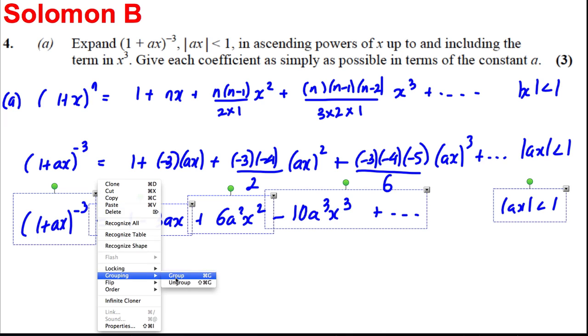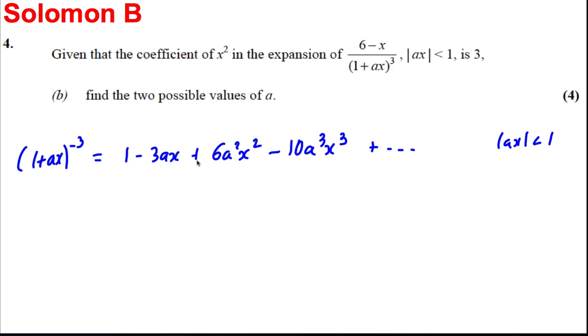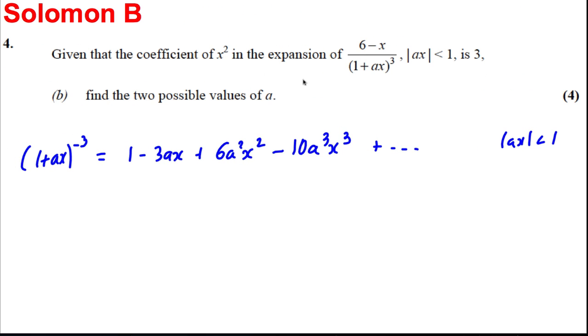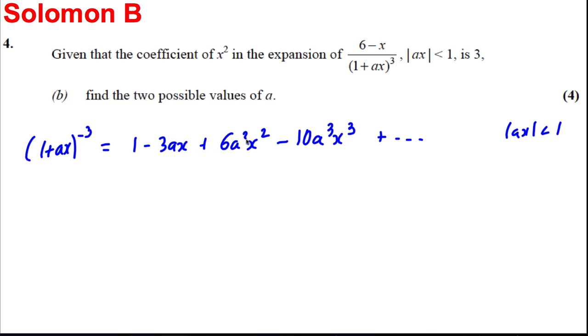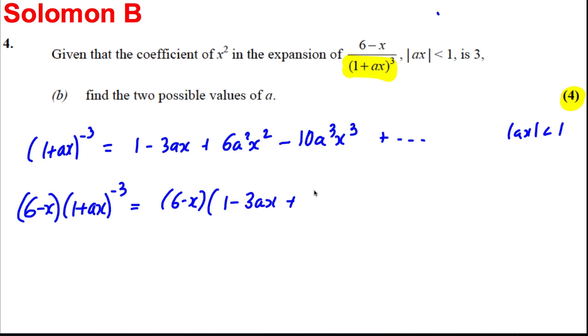Part B says that given that the coefficient of x squared in the expansion of this is equal to 3, find the two possible values of A. This is quite an involved question here, for four marks. Obviously part A we expanded this out here, but we have nothing about 6 subtract X. So the first thing we should do is work out what 6 subtract X multiplied by 1 plus AX to the negative 3 is. So that's going to be 6 subtract X, and then we're going to multiply it by 1 subtract 3AX plus 6A squared X squared subtract 10A cubed X cubed.